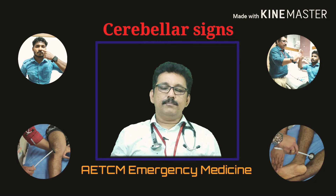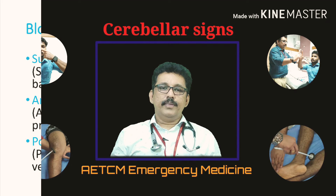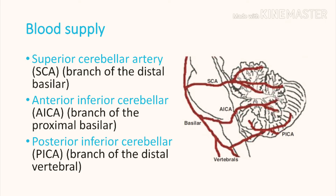There are three major arteries which supply the cerebellum. First is the superior cerebellar artery, a branch of the distal basilar artery. Second is the anterior inferior cerebellar artery, or AICA, a branch of the proximal basilar artery. Third is the posterior inferior cerebellar artery, or PICA, a branch of the distal vertebral artery.